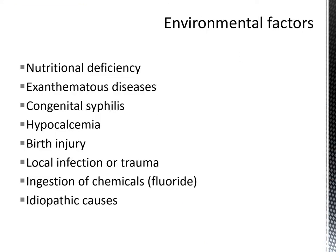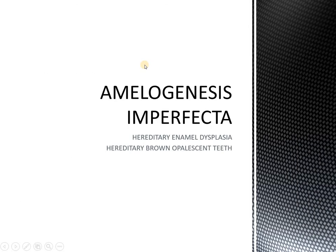In summary, the environmental factors include nutritional deficiency, exanthematous diseases, congenital syphilis, hypocalcemia, birth injury, local infection or trauma, ingestion of chemicals like fluorides, and sometimes idiopathic causes. In the next part, we will continue about amelogenesis imperfecta, which is the hereditary variation of enamel hypoplasia.